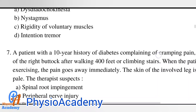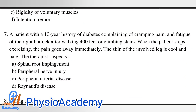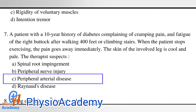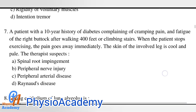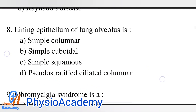Question number seven: a patient with a 10-year history of diabetes complaining of cramping pain in the right buttock after walking 400 feet or climbing stairs. When the patient stops exercising, the pain goes away immediately. The skin of the involved leg is cool and pale. The therapist suspects option A: spinal root impingement, option B: peripheral nerve injury, option C: peripheral arterial disease, option D: Raynaud's disease. The correct answer is option C: peripheral arterial disease.